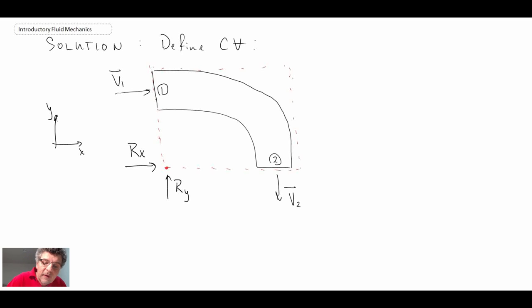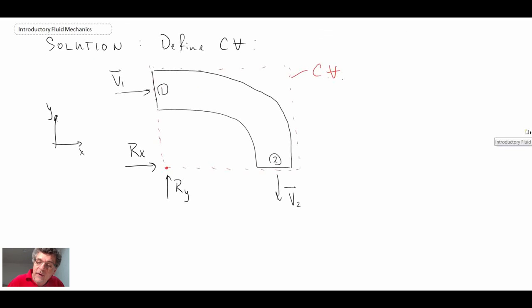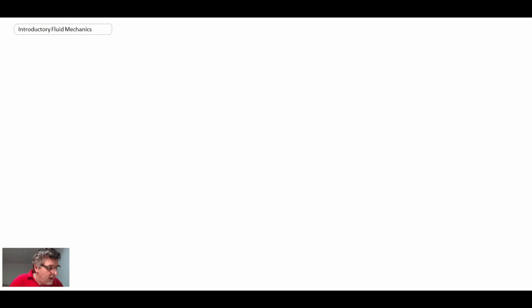So in order to solve this, we're not going to jump right into the conservation of linear momentum. The first thing we're going to do is use the continuity equation or conservation of mass. Now, why might we be doing that? Well, let's take a look at the problem statement. We're given V2, but we are not given V1. We need to figure out what the velocity on inlet into this elbow is. So that's why we're going to apply the conservation of mass first, and we'll find V1 through that process.